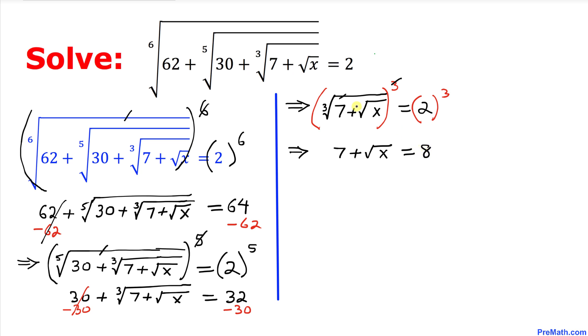We are almost finished. Let's move this 7 on the other side. So we will end up with the square root of x equal to 8 minus 7. It's just like subtracting 7 from both sides. So square root of x turns out to be 1.